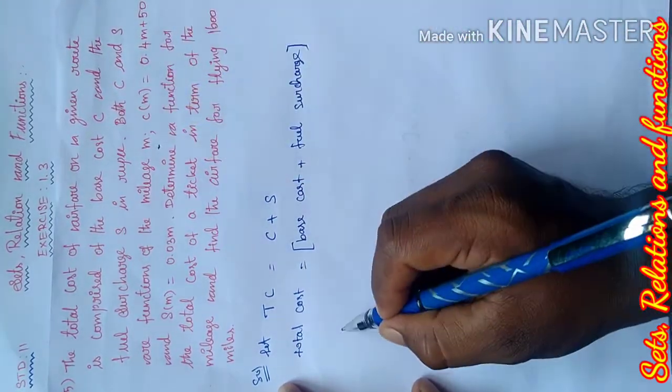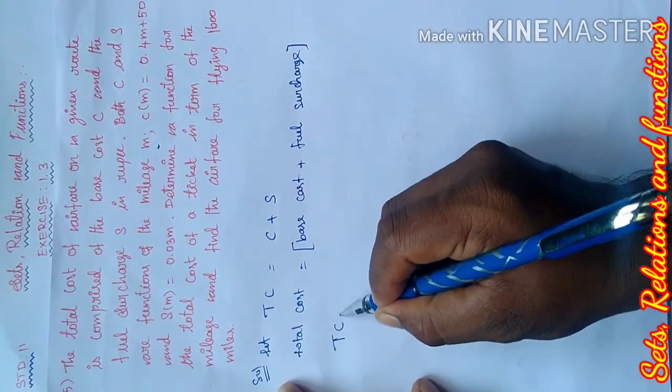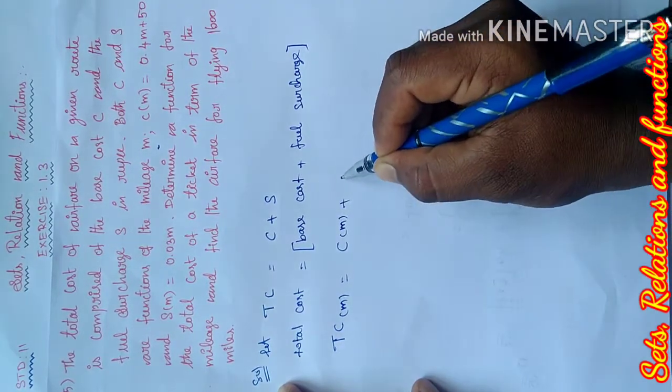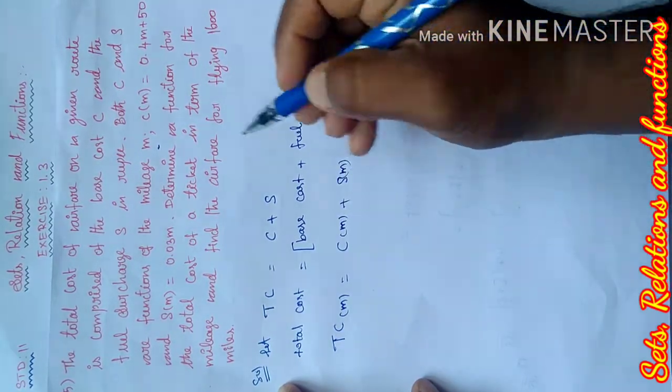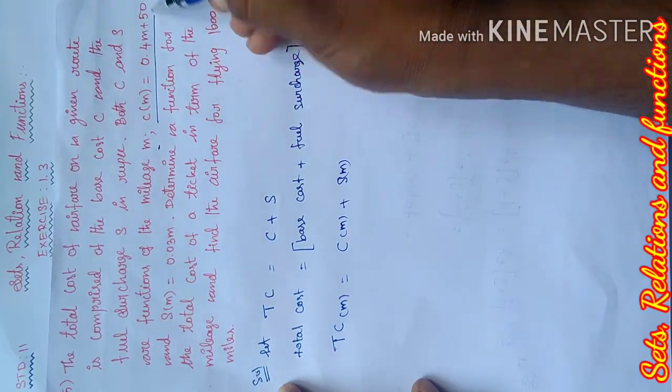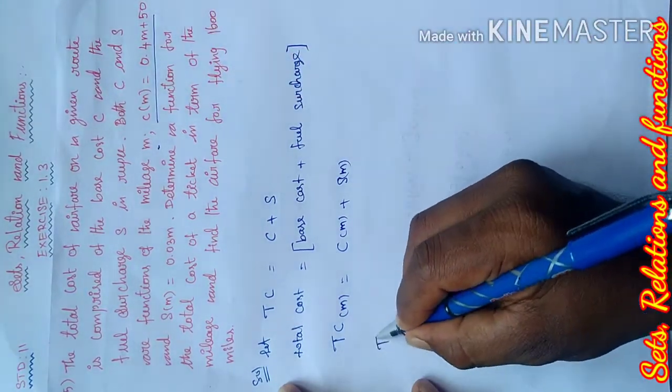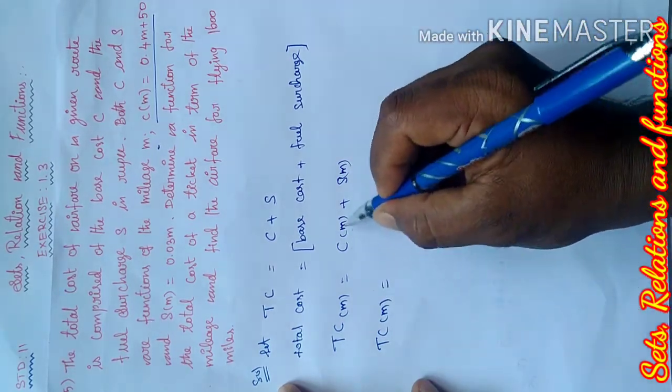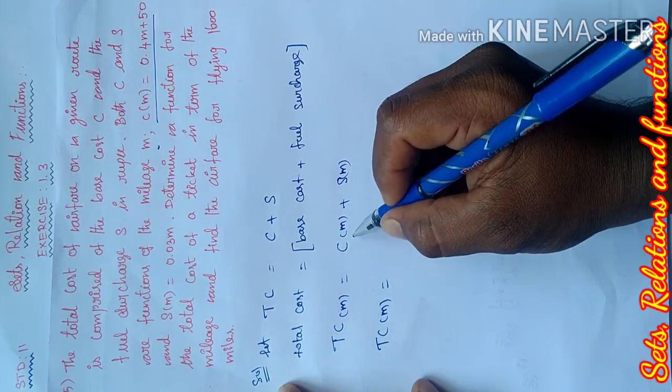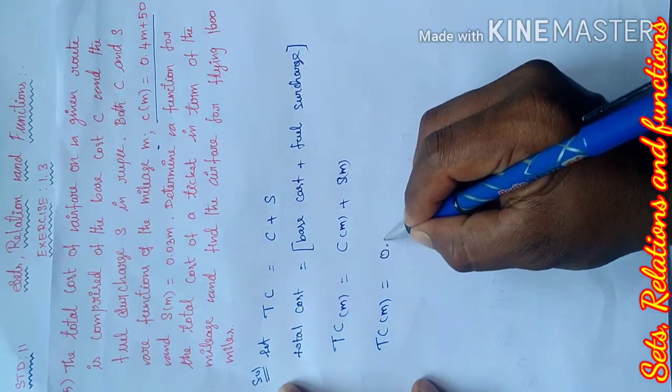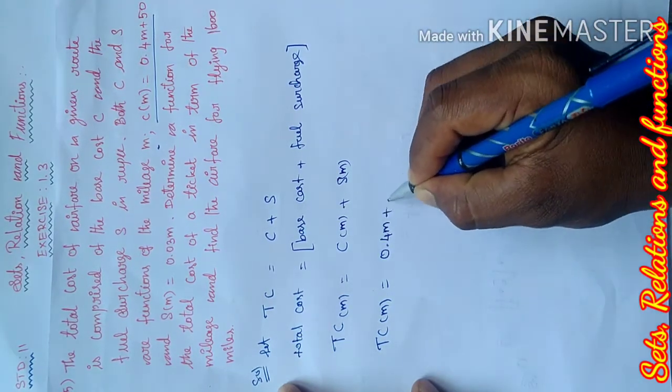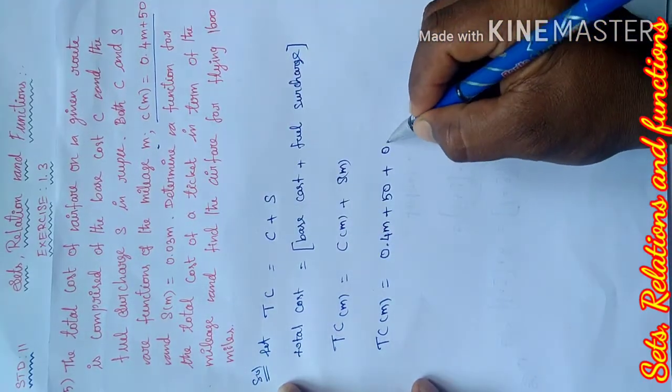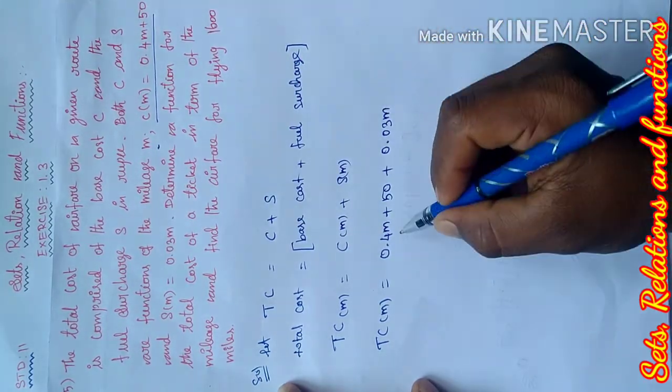Mileage M. TC of M equals C of M plus S of M. The total cost of mileage equals the base cost of mileage, 0.4M plus 50, plus S of M equals 0.03M.